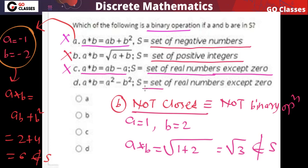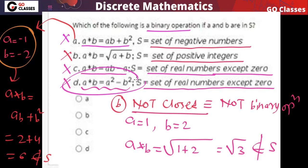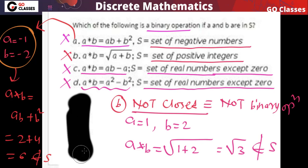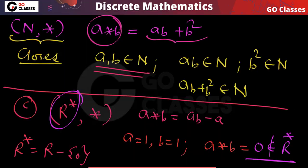Option D: the base set is again the set of non-zero real numbers, and the operation is a★b = a² − b². This is also not a binary operation because if you take a = 1, b = 1, then 1★1 = 0, which does not belong to the set of non-zero real numbers. So none of these operations for this question is a binary operation.